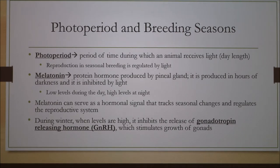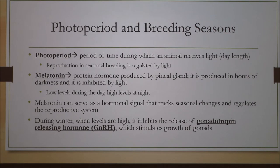During the winter, since we have high levels of melatonin, this protein hormone inhibits the release of gonadotropin-releasing hormone, or GnRH, which is responsible for stimulating the growth of the gonads. This helps explain why the ovaries in mares are so small and inactive during the winter — because there is essentially no GnRH being released.